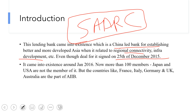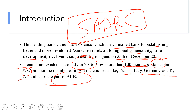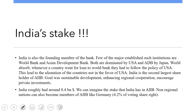Now more than 100 countries are members. Japan and the USA are not members, because there is another organization dominated by Japan, and similarly the USA dominates the World Bank. However, countries like France, Italy, Germany, the UK, and Australia are part of the AIIB.